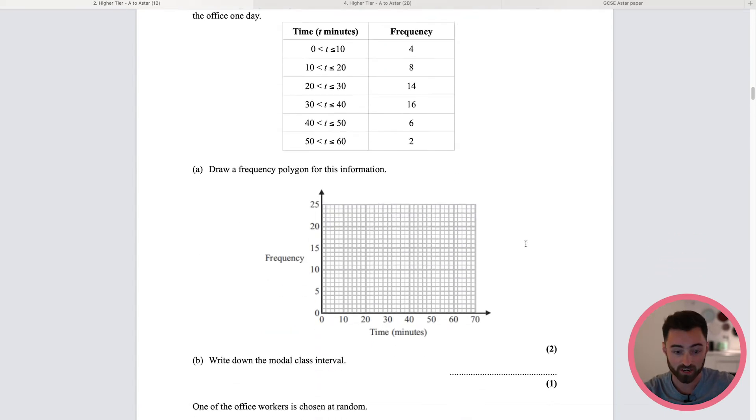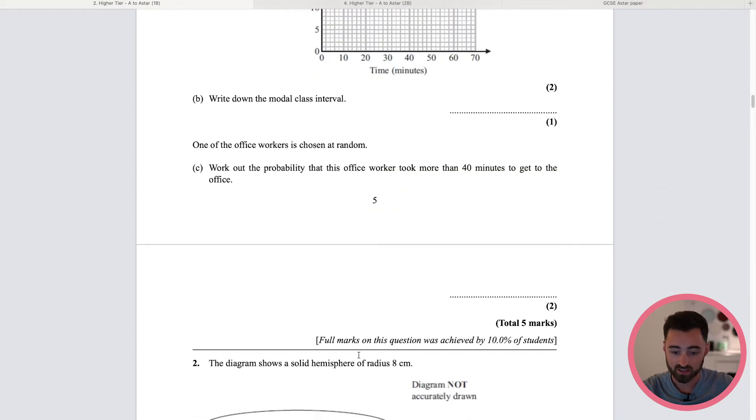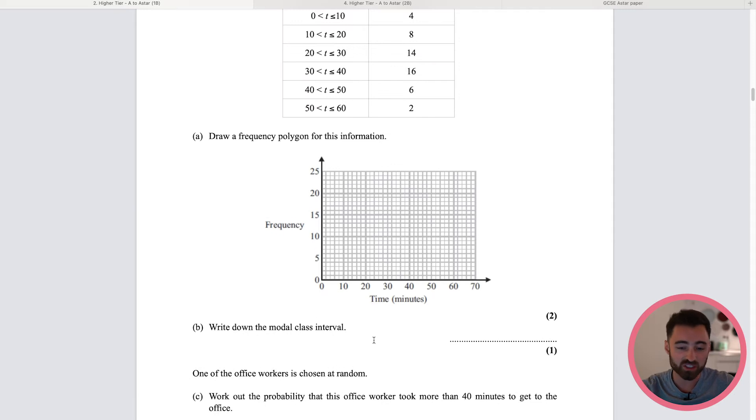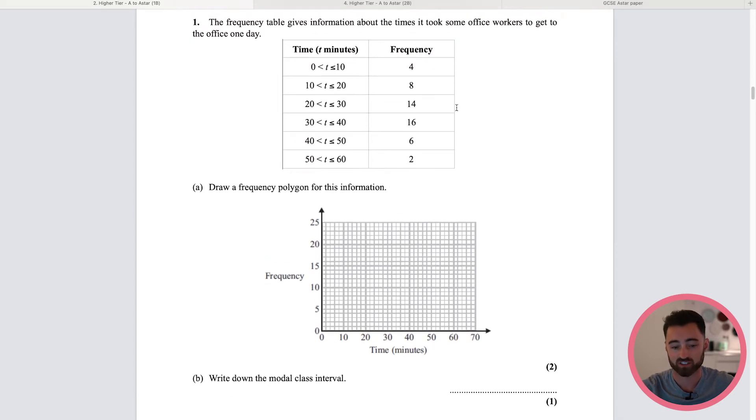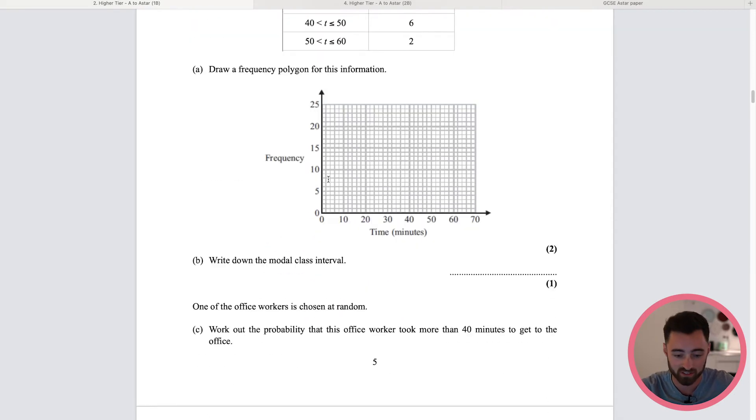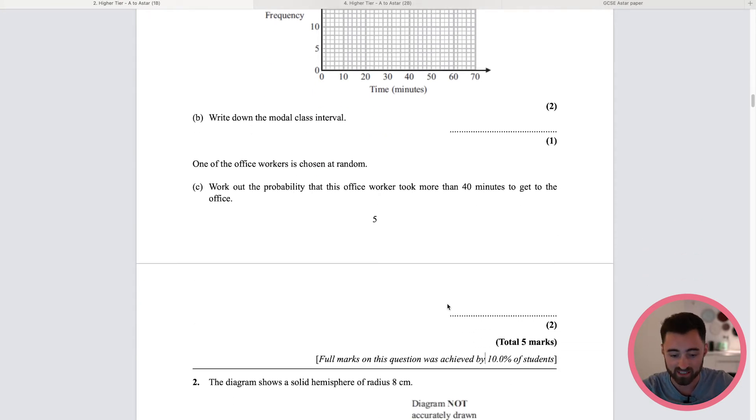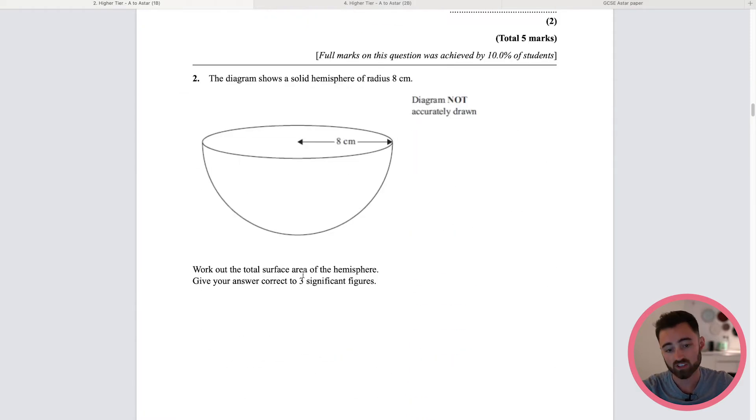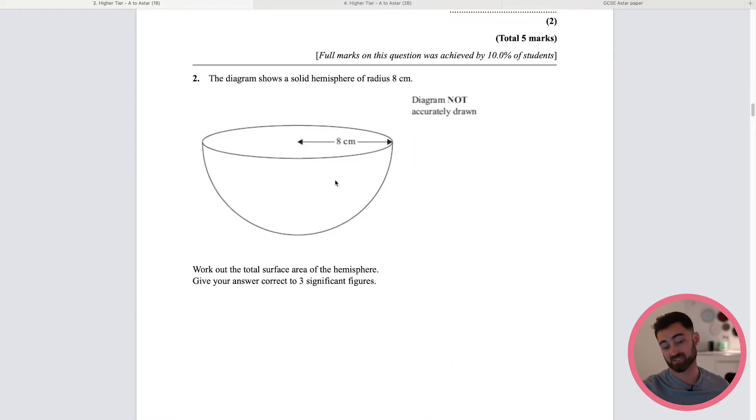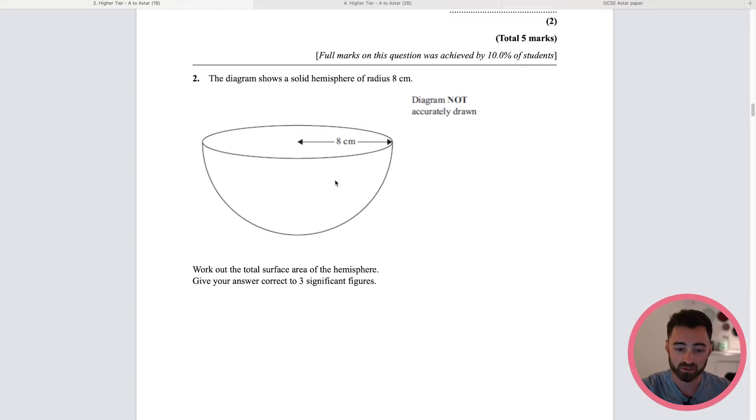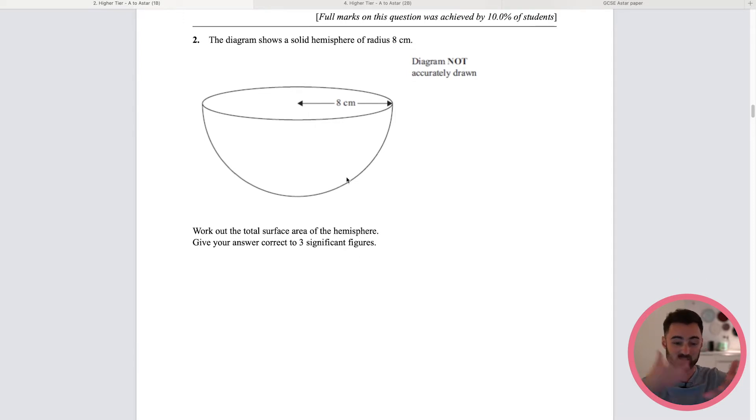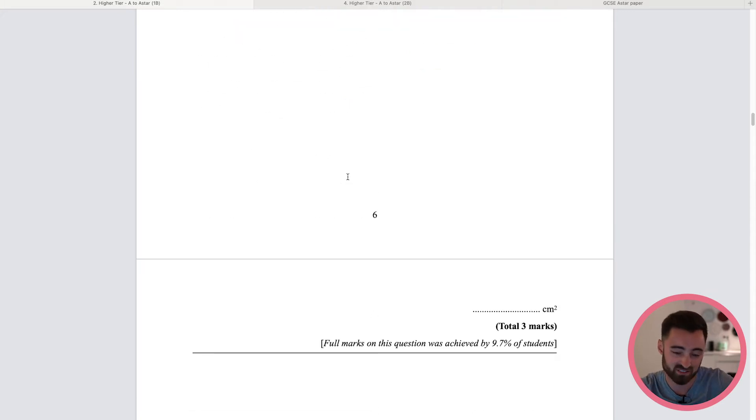Okay, so a bit of stats here and we need a frequency polygon. See, here's the thing, there's nothing too crazily new about this question, right? This one you're probably going to have to do a bit of thinking, but only 10% got that fully right. Total surface area again, I think that's pretty simple. Surface area of a sphere is in your formula book, add a circle to it, do a bit of halving because it's a hemisphere, nothing too crazy.